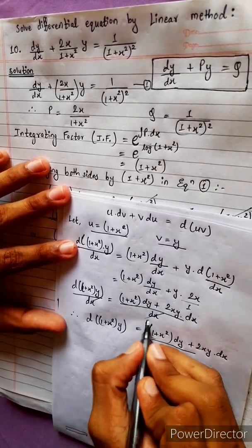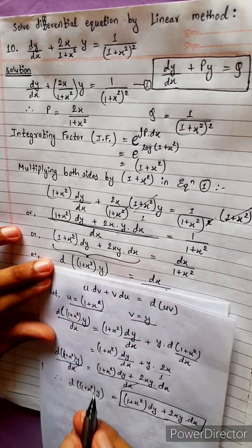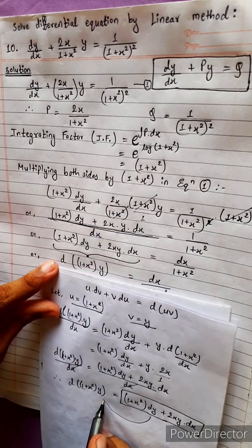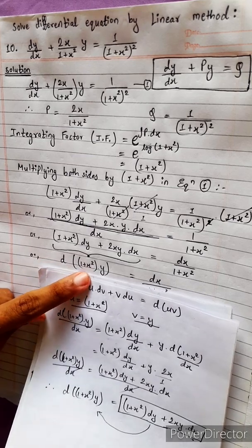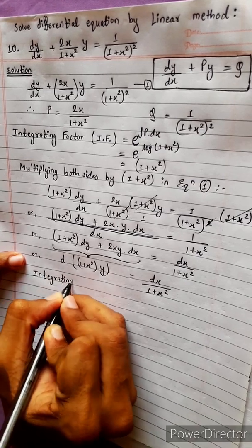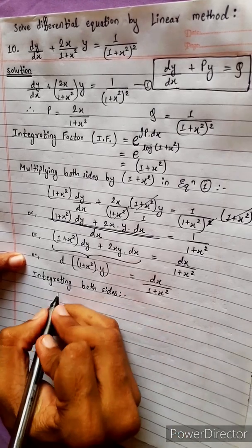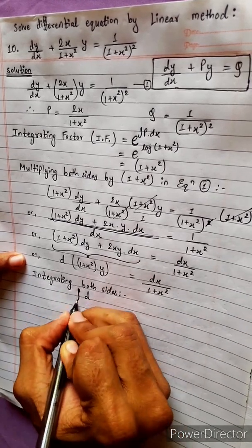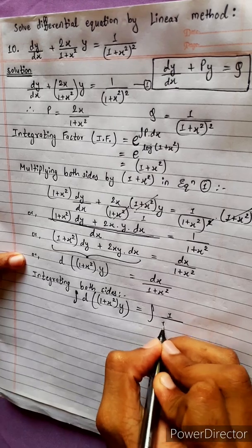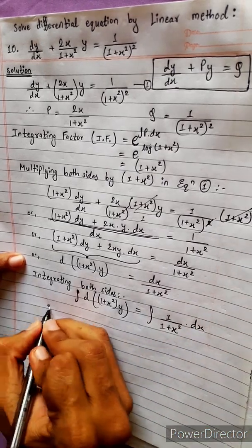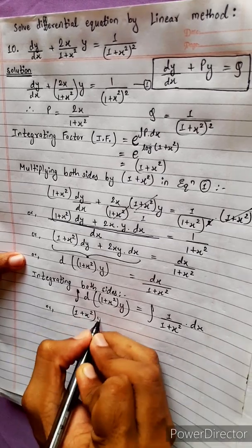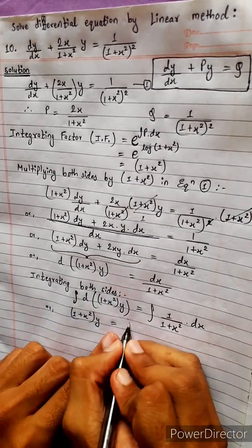Now I am going to replace using this formula. So d[(1 + x²)·y] equals dx/(1 + x²). Integrating both sides: integration of d[(1 + x²)·y] equals integration of 1/(1 + x²) dx. The left side integrates to (1 + x²)·y. The right side uses the arctan formula, giving (1 + x²)·y equals tan⁻¹(x) plus C.